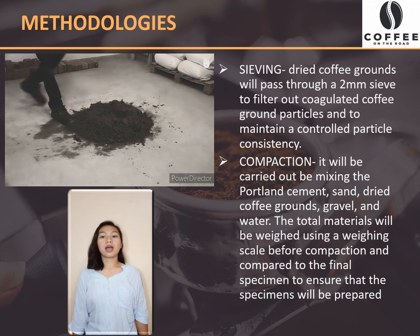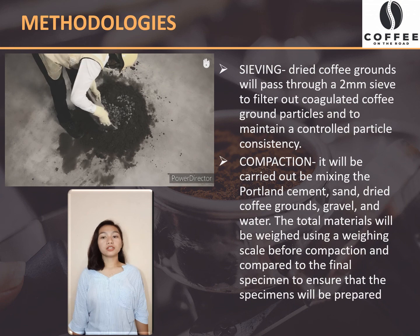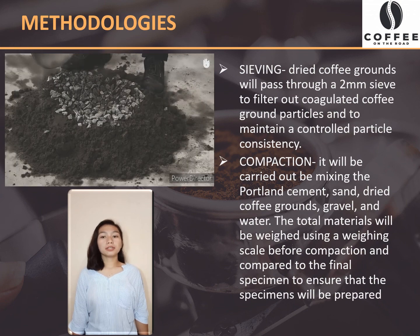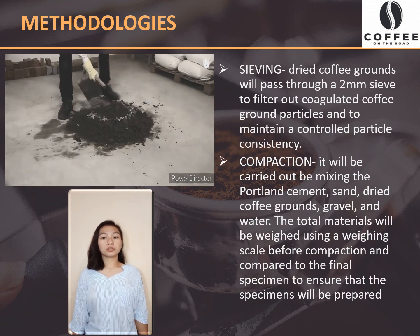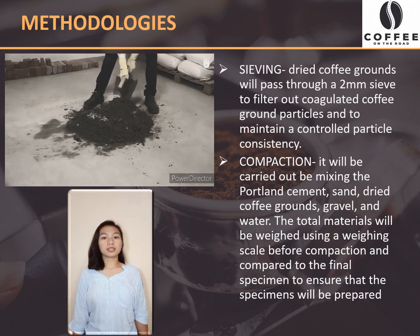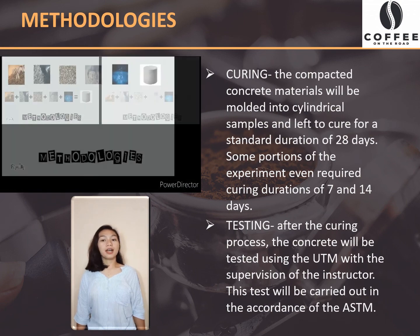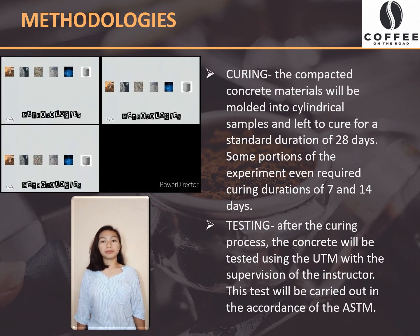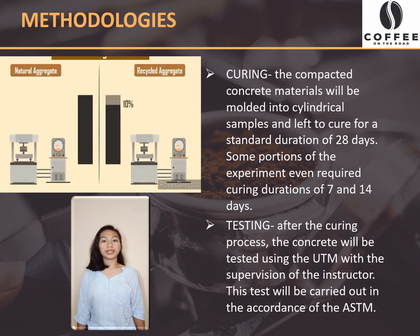Next is compaction. It will be carried out by mixing Portland cement, sand, dried coffee grounds, and gravel. The total materials will be weighed using a weighing scale before compaction and compared to the final specimen to ensure that the specimens will be properly prepared. After compaction is the curing. The compacted concrete materials will be molded into cylindrical samples and left to cure for a standard duration of 28 days. Some portions of the experiment even required curing durations of 7 and 40 days.